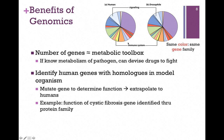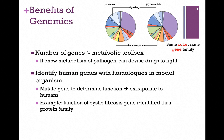If we find the gene in a target organism, that is a model organism, and we can mutate that gene and discover its function, then we can extrapolate that to the human system. This is an example of how we discovered the function of the cystic fibrosis gene by this kind of sequence comparison.